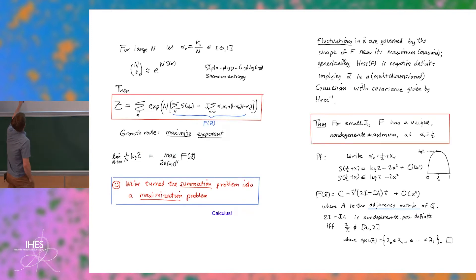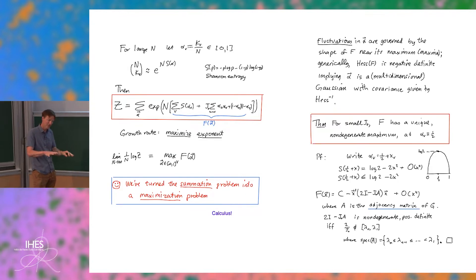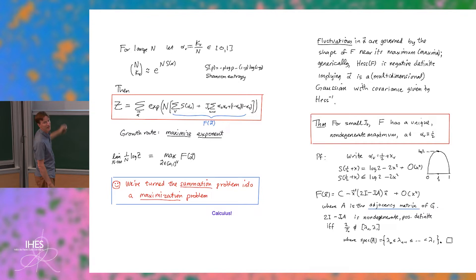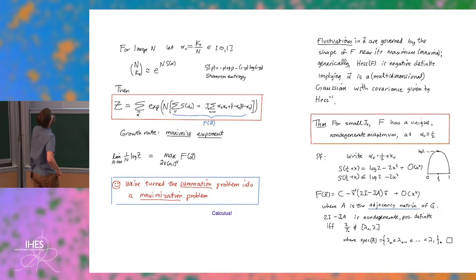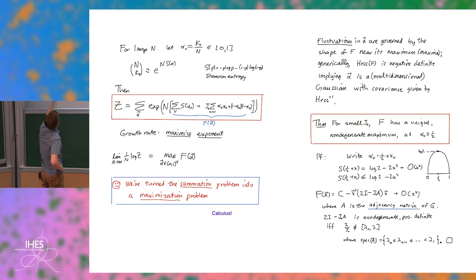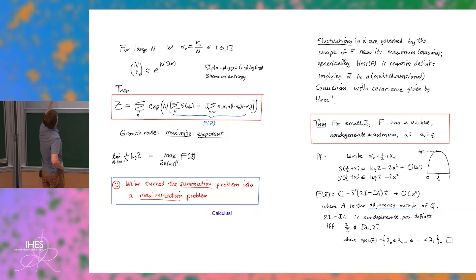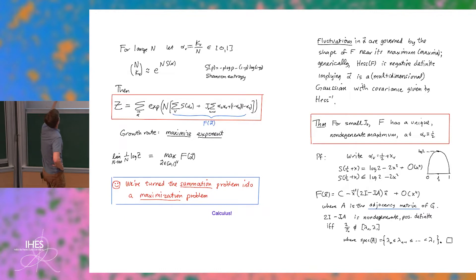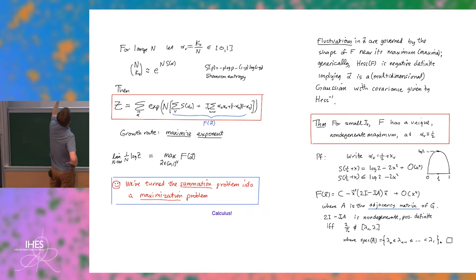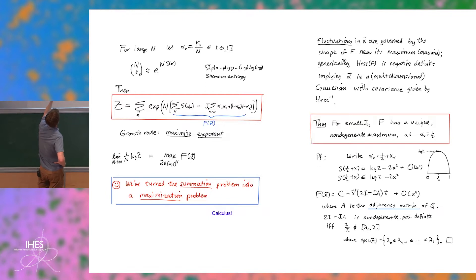For large n, let alpha_v be the fraction of spins over vertex v that are plus — a number between 0 and 1. The binomial coefficient becomes e to the n times the Shannon entropy. So the partition function, for fixed n, is a sum over the alphas (multiples of 1/n) of the exponential of n times an expression: the Shannon entropy term from the binomial coefficients, plus a quadratic interaction term — a sum over nearest neighbors.